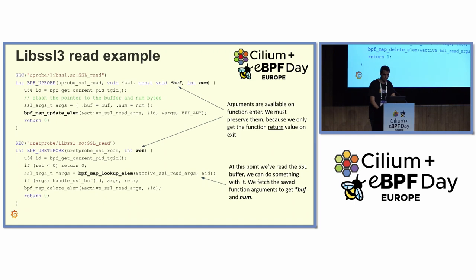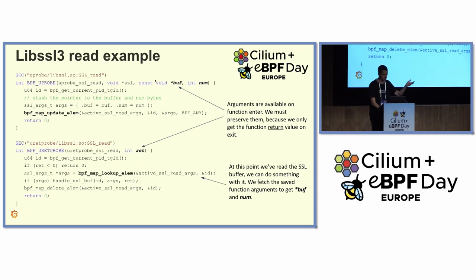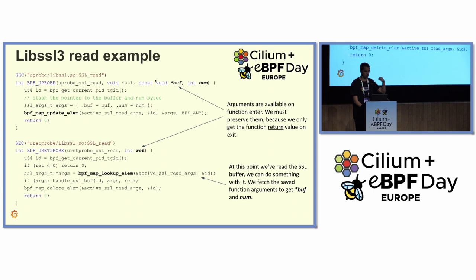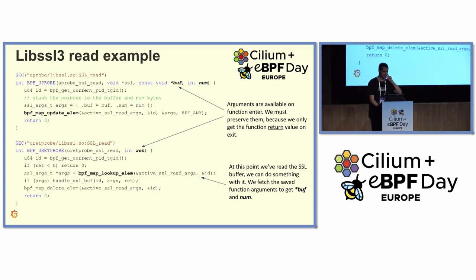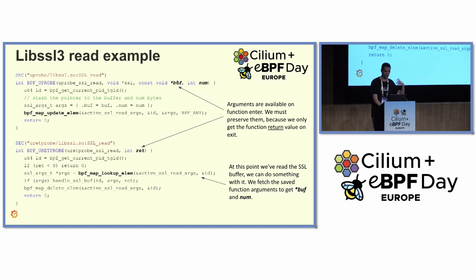This is only the skeleton — it doesn't do anything beyond getting the information we need. Since we need to know when a function starts and ends, we attach a U-probe and a U-ret probe. The U-probe gives us information like the buffer — this is libSSL3 SSL read — so we can know when SSL data is being read, and get parameters like the buffer or the size. In the U-ret probe we can get the return code.